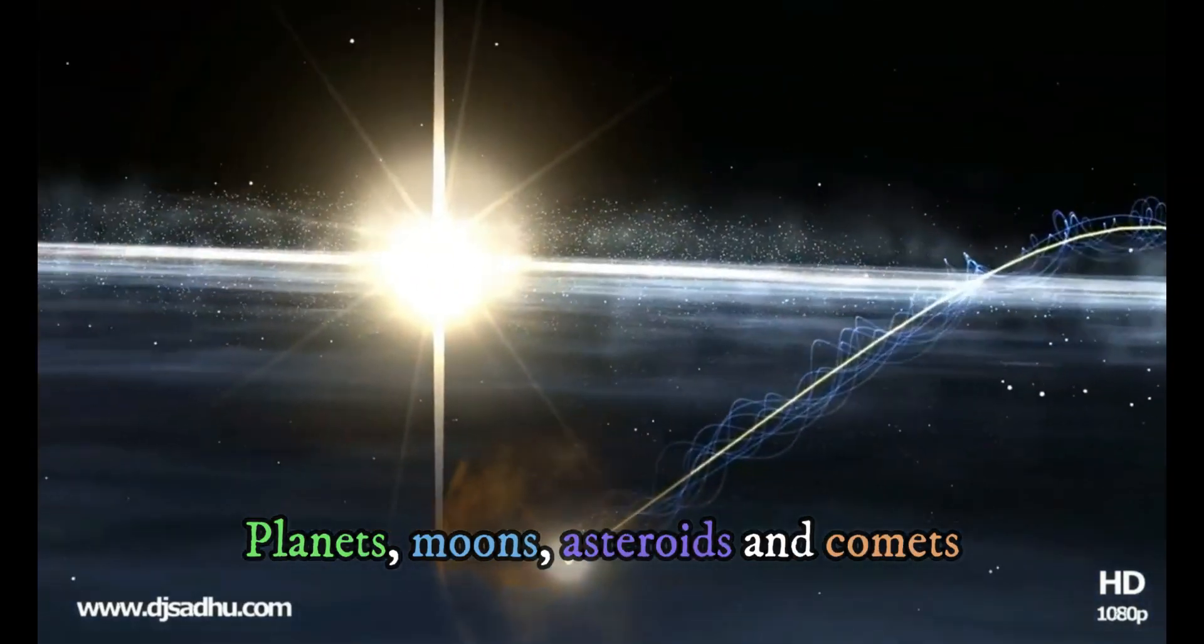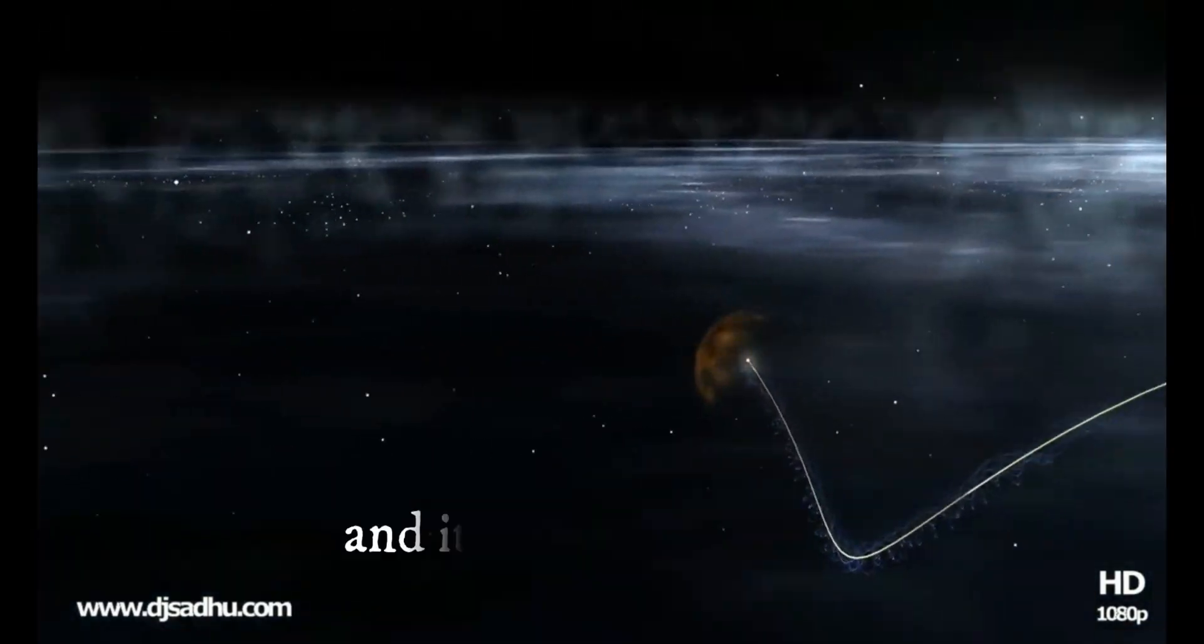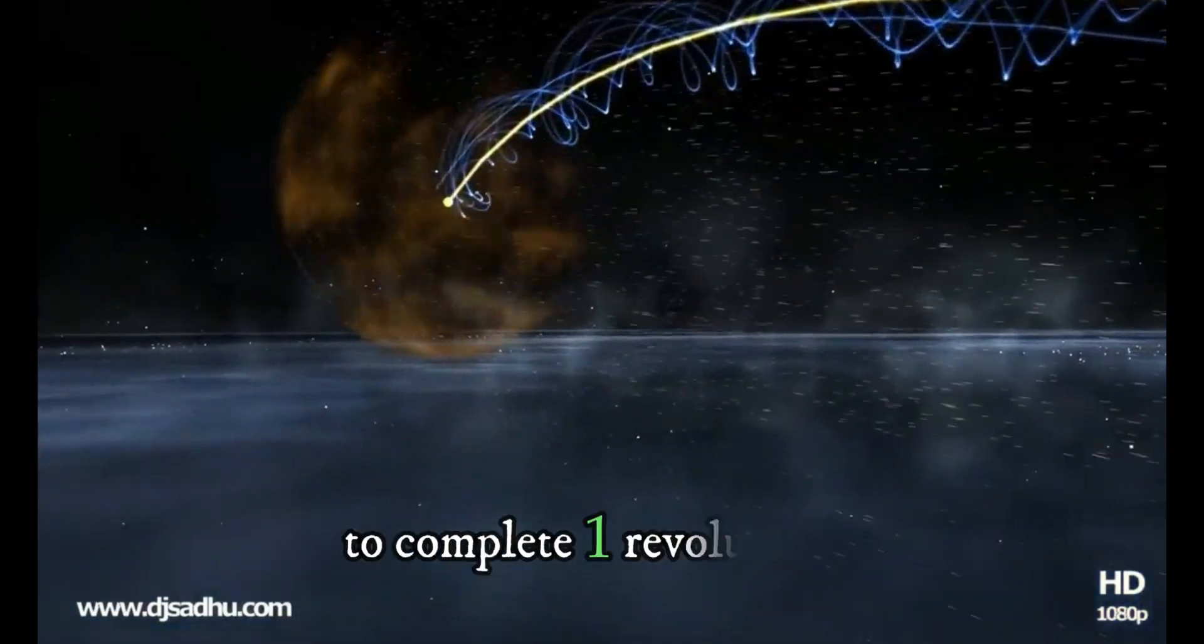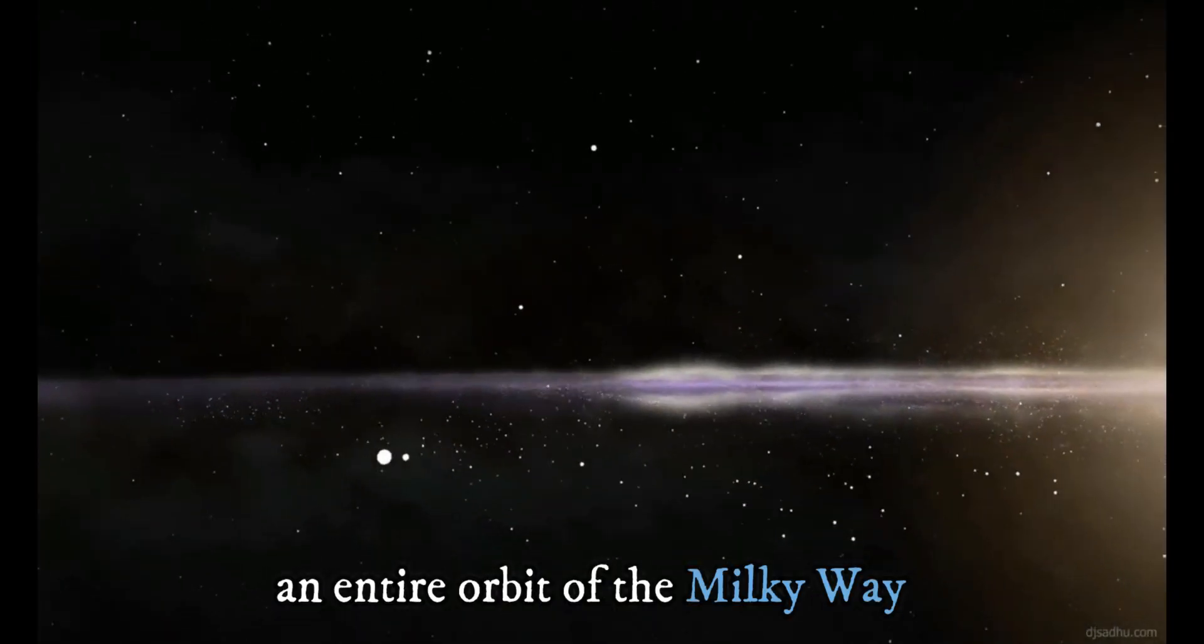It takes approximately 225 to 250 million Earth years to complete one revolution. This means that we will not make an entire orbit of the Milky Way in our lifetimes.